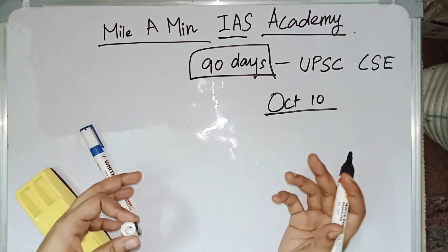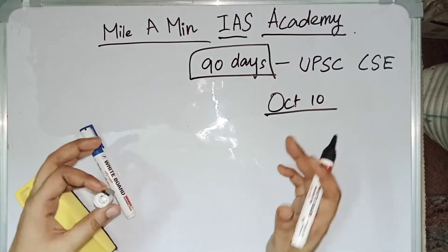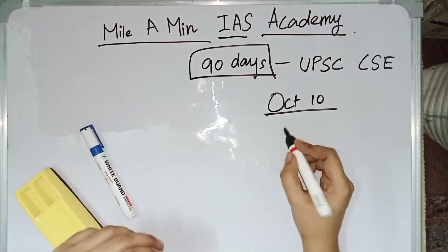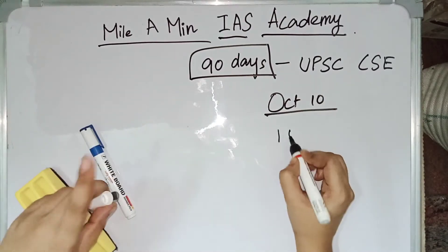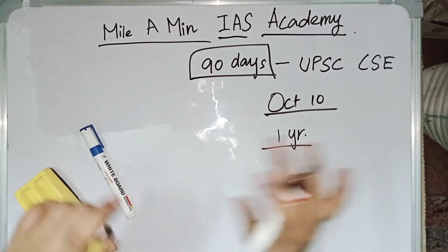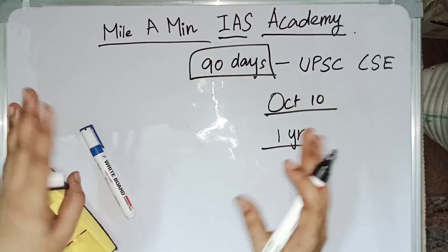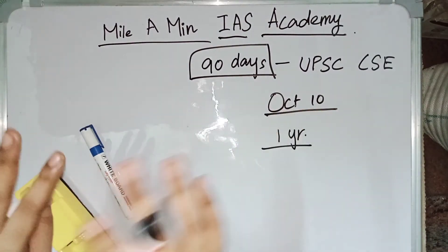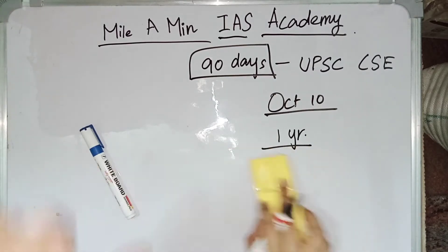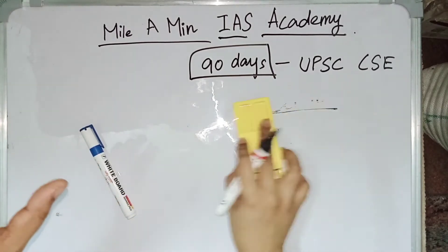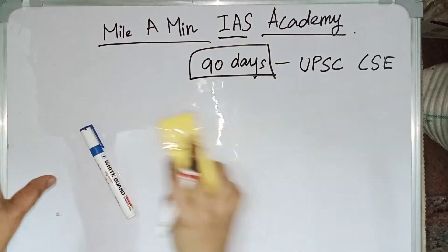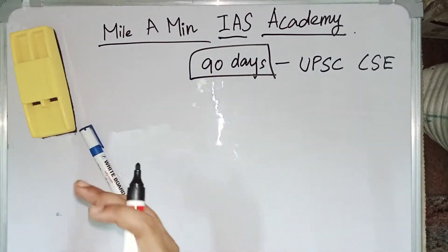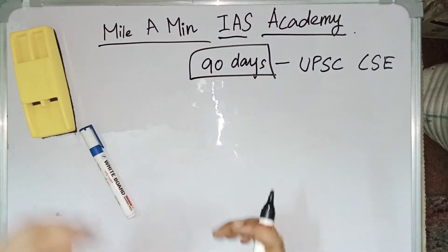We have extra 90 days and within this 90 days we need to complete the entire syllabus. Generally we take a year to complete the entire syllabus but now we do not have an entire year. So within this 90 days we should complete as much as possible. Completing syllabus is not the only thing — we should also revise our subjects so that we can crack our exams.